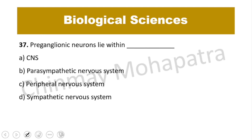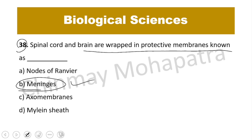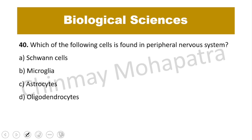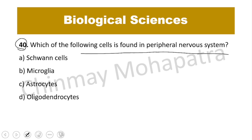Question 37: Pre-ganglionic neurons lie within the central nervous system — that is the right answer. Question 38: Spinal cord and brain are wrapped in protective membranes known as — the right answer is meninges, which we discussed in Part 1.